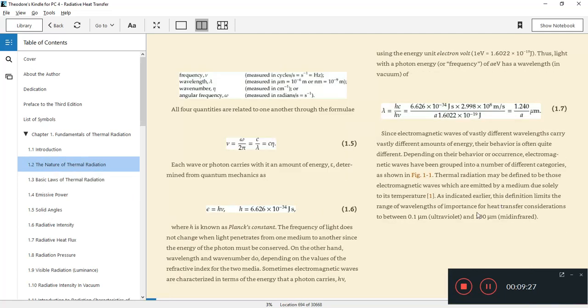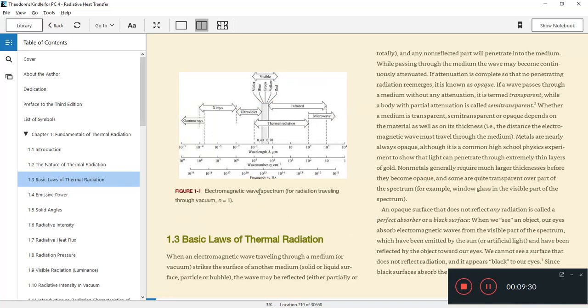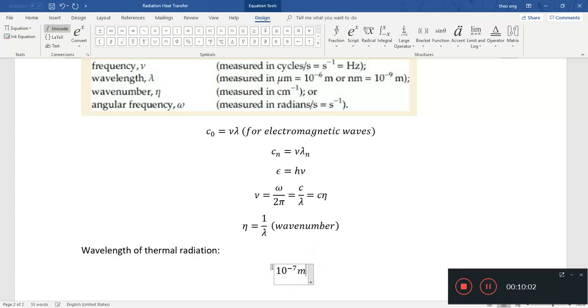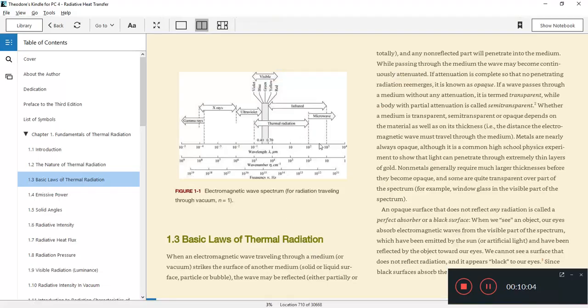Where is the electromagnetic spectrum? Where is thermal radiation? We see λ in microns: 10⁻¹ to 10² microns. So 10⁻¹ microns is 10⁻⁷ meters. The wavelength of thermal radiation is 10⁻⁷ meters to 10⁻⁴ meters.